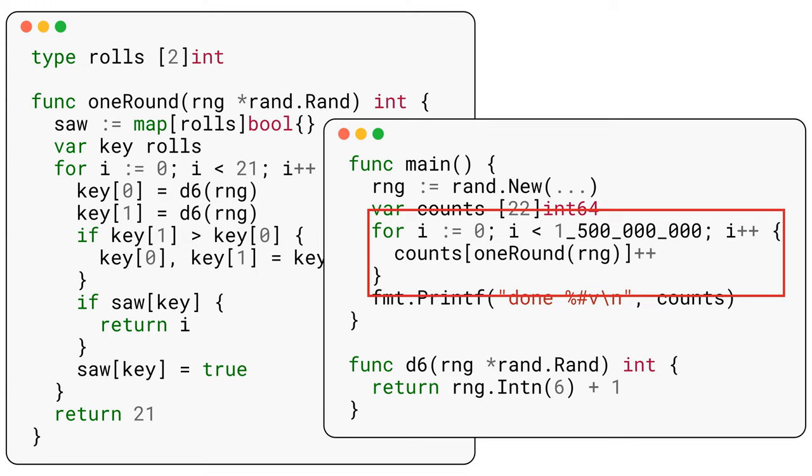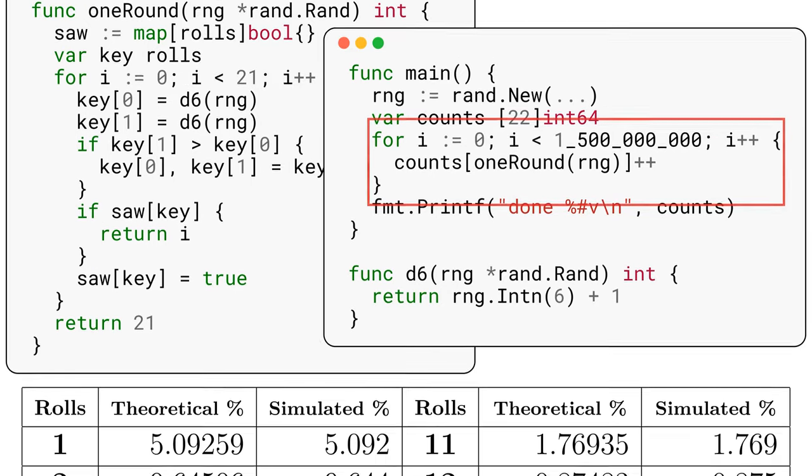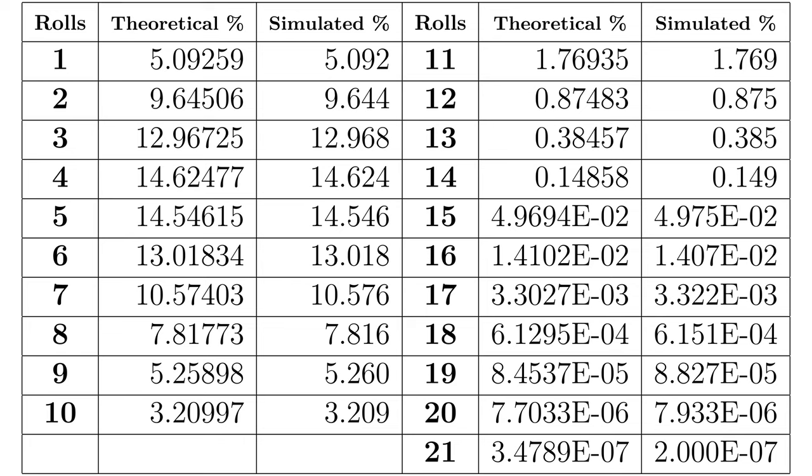This other loop ran that simulation 1.5 billion times. Why 1.5 billion? There was a rule of thumb I heard in a stats class where you would want to simulate something until each outcome should happen at least five times, and with the least likely outcome happening 1 in 287 million times, 1.5 billion meets that objective. This table compares the values from our formula on the left to the simulated values on the right. The columns are extremely close, so I feel very confident the formula is correct. The error is a bit larger for 19 rolls and above, but I believe that is just statistical fluctuation due to the very low probabilities of those outcomes.